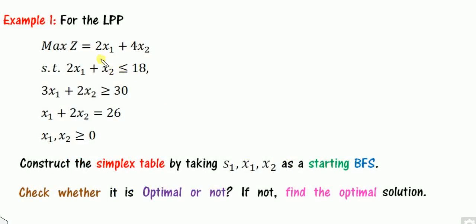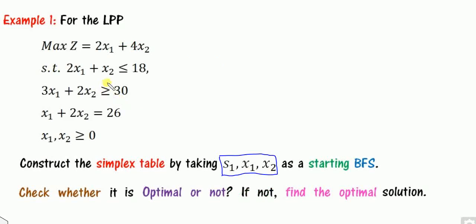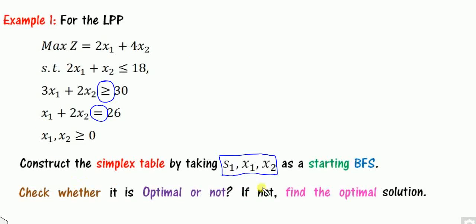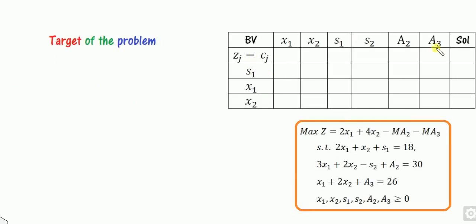Let's look at the first example. For the given LPP, construct the simplex table by taking the given variables as the starting BFS, instead of starting with the original S1, S2. Once you construct the simplex table, check whether this is optimal or not, and if it is not optimal, find the optimal solution. The first step is always to write in standard form. Since one constraint has a greater-than sign and the third constraint is an equality, we use the big M method here.